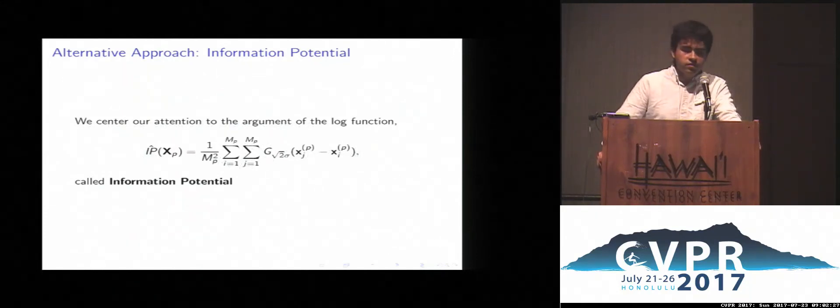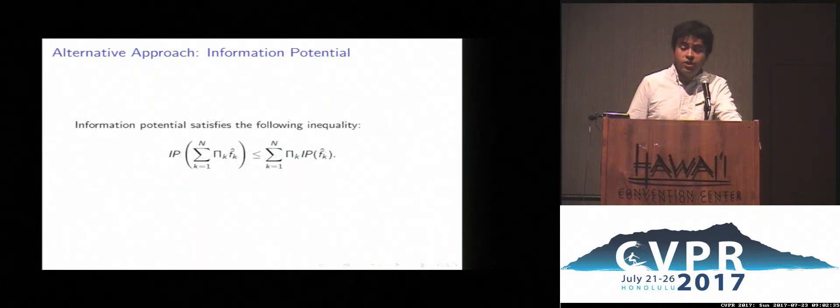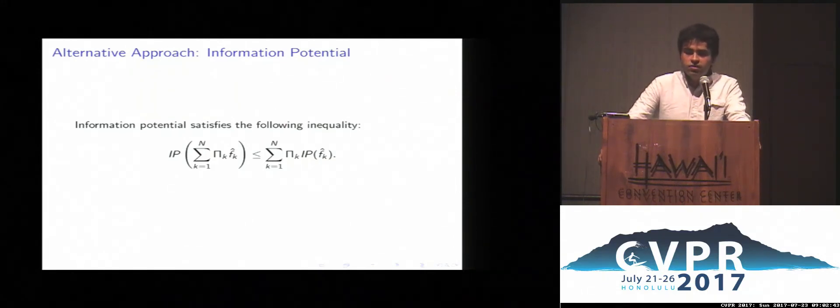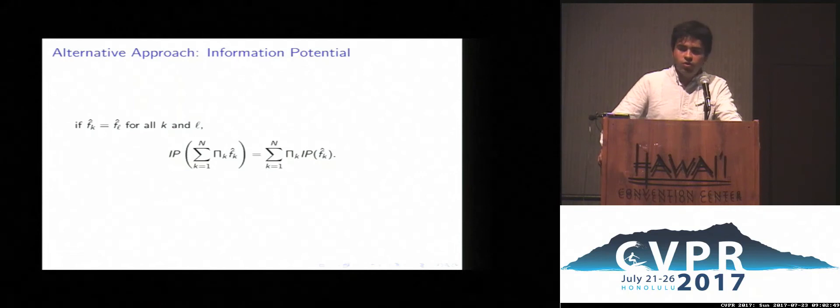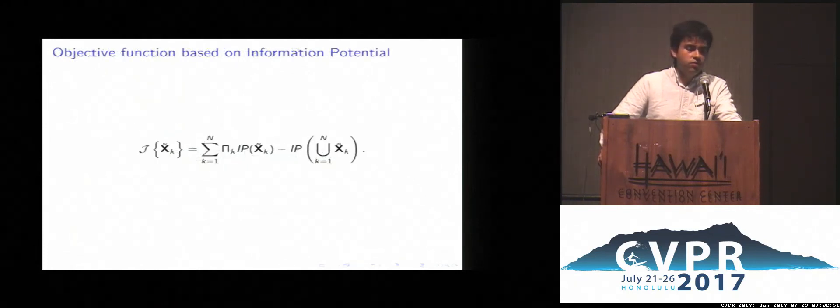The information potential has a special property that if we take a group of point sets and represent as PDFs, then the sum of the PDFs, the information potential of the sum of the PDFs is properly bounded by the sum of the information potentials of each PDF taken individually. When all the densities are the same, then these two terms become equal. So the cost function that we propose is taking the difference between these two terms of the inequality.